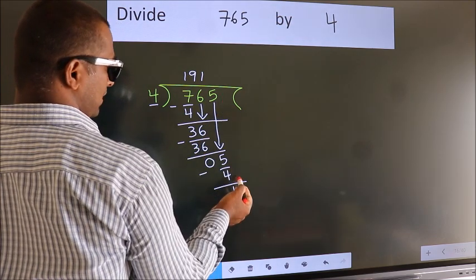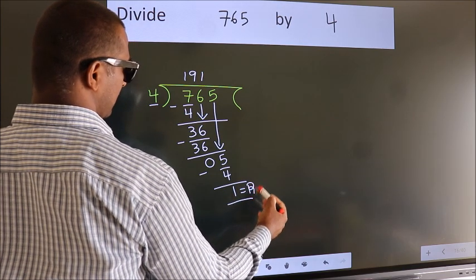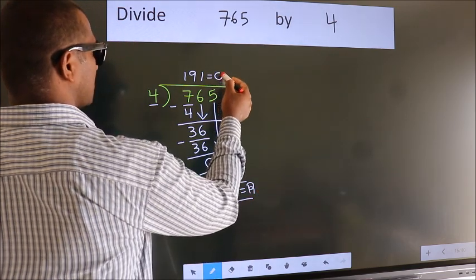No more numbers to bring it down. So, we stop here. This is our remainder. This is our quotient.